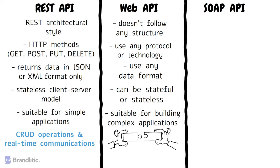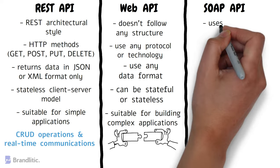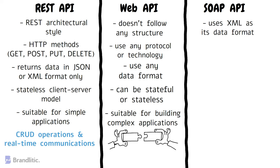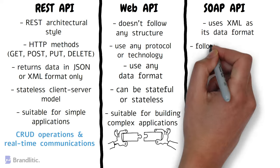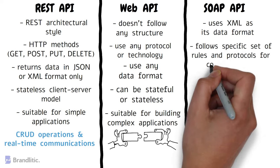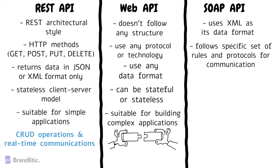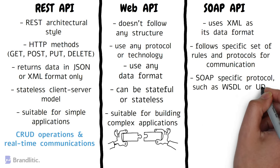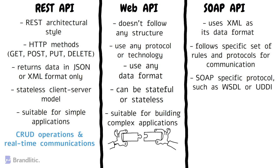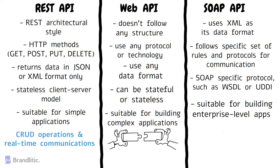And lastly, SOAP API uses XML as its data format. It follows a specific set of rules and protocols for communication, and requires a SOAP-specific protocol such as WSDL or UDDI to describe the interface. It is suitable for building enterprise-level applications that require robust security and reliability.